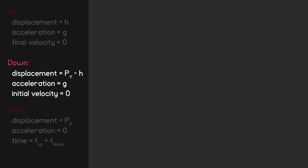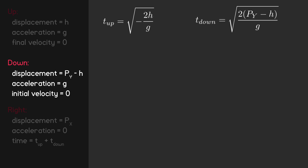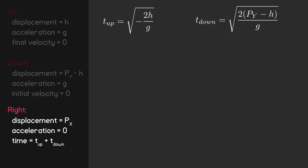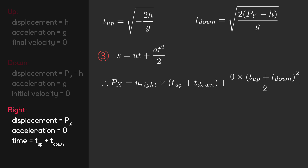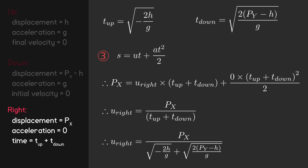Now that we have equations for time up and time down, we can solve for the initial velocity of the horizontal motion. Our known variables are displacement, acceleration, and time, so we'll be using equation 3 again. Displacement becomes P-X, time becomes time up plus time down, and acceleration becomes 0. We then rearrange to solve for initial velocity and substitute in our expressions for time up and time down.